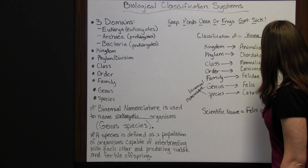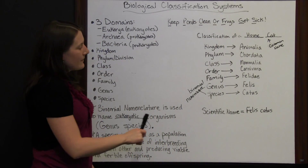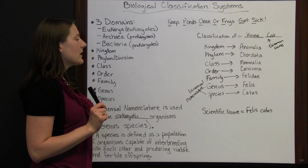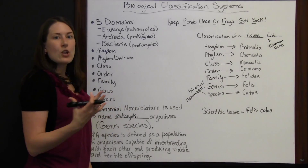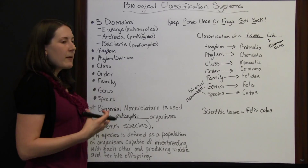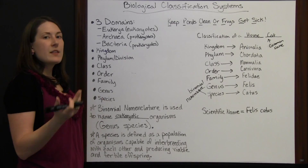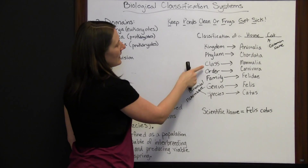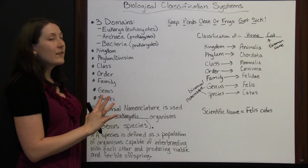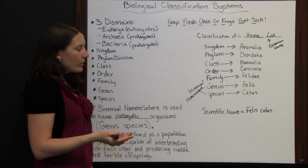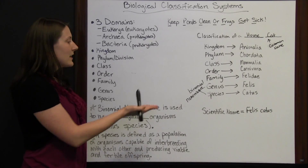Whenever you see two Latin words together like this, you're probably looking at the scientific name for that organism. If you know the genus and species, you can figure out which other organisms are members of that group and what they might have in common, and build up to determine the family, order, class, phylum, kingdom, and domain. This classification system is used internationally — anywhere in the world, if a scientist saw this Latin name, whether they spoke English or another language, they would know which species it referred to.